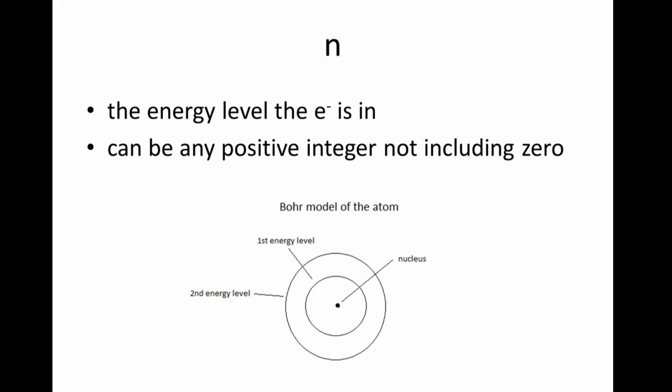N, which is the principal quantum number, is the energy level the electron is in. It can be any positive integer, not including zero. So if N equals one, the electron would be in the first energy level, and if N equals two, it would be in the second energy level.